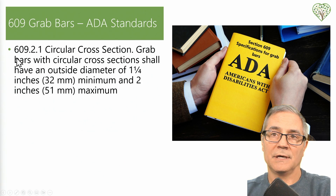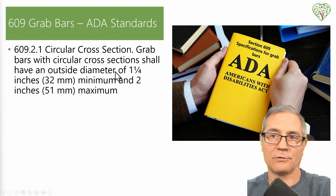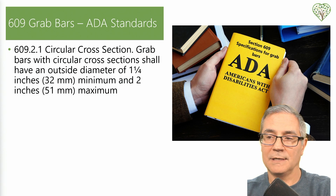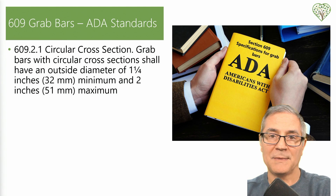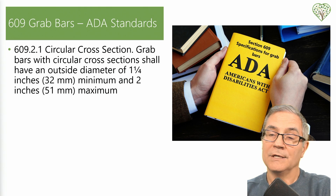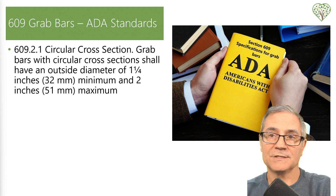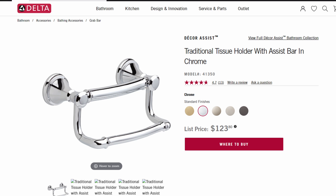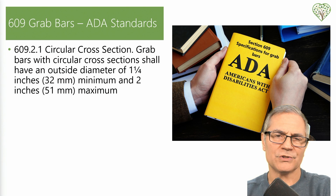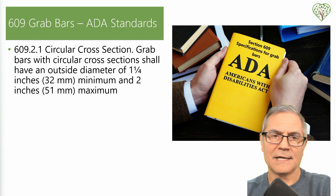There are two areas I want to talk about as they relate to grab bars. The first is section 609.2.1, which talks about the diameter of any grab bar. In a public environment, the minimum diameter is one and a quarter inch and the maximum is two inches. In my house I use that size, and sometimes I'll use smaller diameters — about one inch — which are used on toilet paper grab bars or small safety handles around 12 inches long.